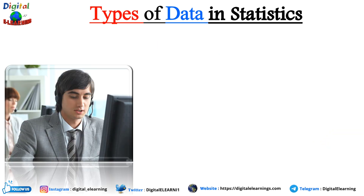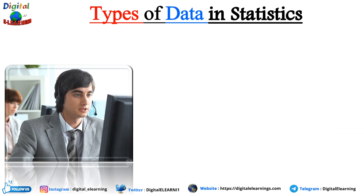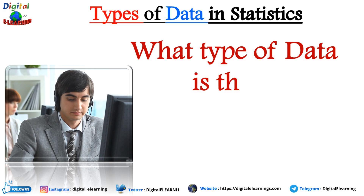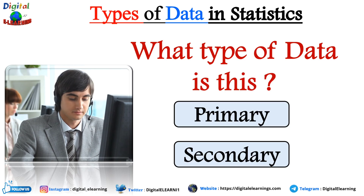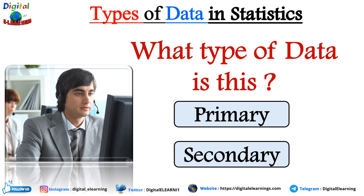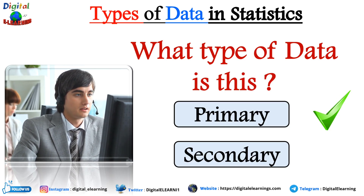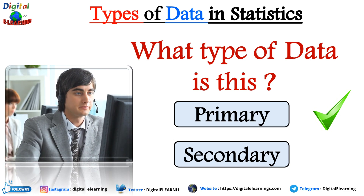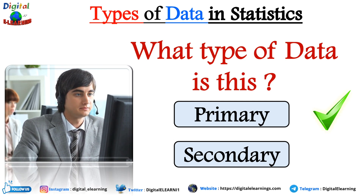Now look at this next example — he is calling on the phone. So what type of data is this, primary or secondary? This is primary data, considering that he is calling and getting firsthand information directly from the source itself in real time. That is why it is primary data.